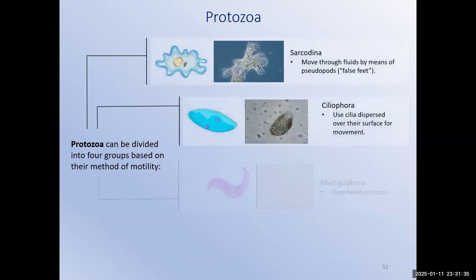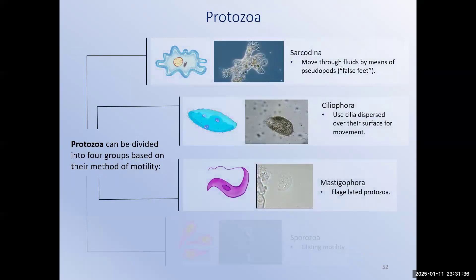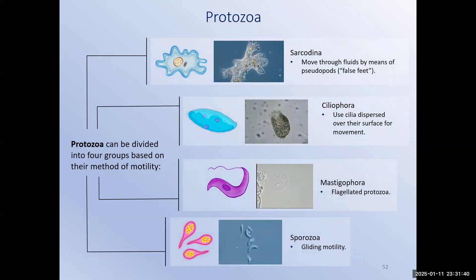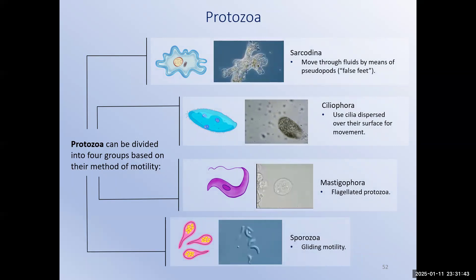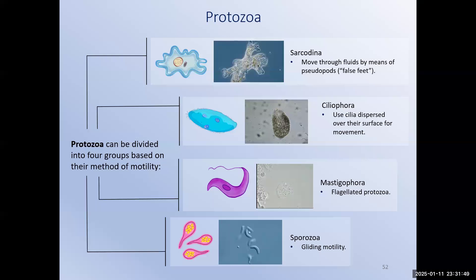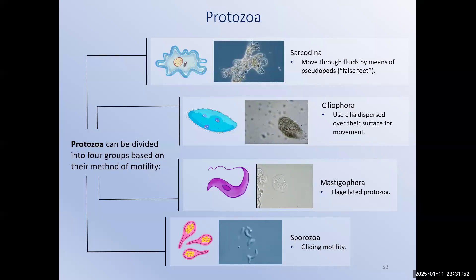Protozoa are classified and named based on how they move. There are four classes. In future chapters, we're not going to focus on the movement of protozoa per se as it relates to how they cause diseases. Your lecture outline asks you to know these names, but I'm not going to test you on them.